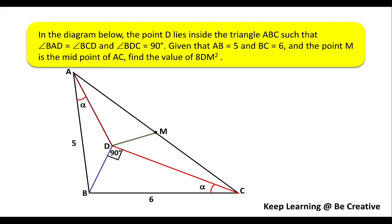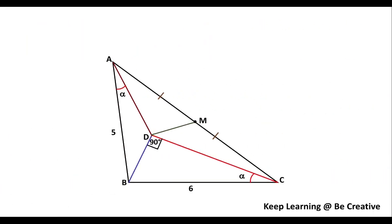Let's see how to solve this problem. As we have been given that angle BAD and angle BCD are equal, so we have marked them as alpha here and alpha here. Also we have been given that angle BDC is 90 degrees. So this angle BDC is 90 degrees and M is the midpoint, so we have AM equals MC.